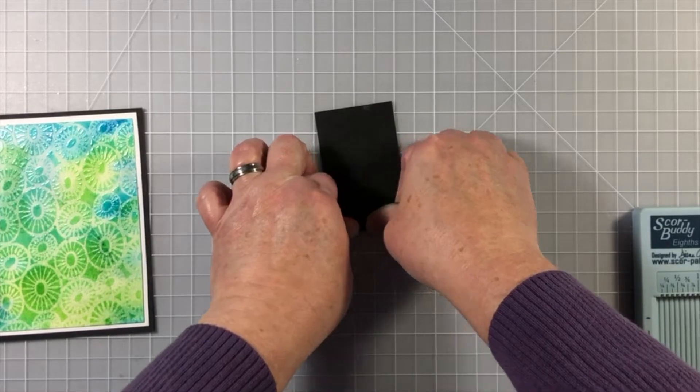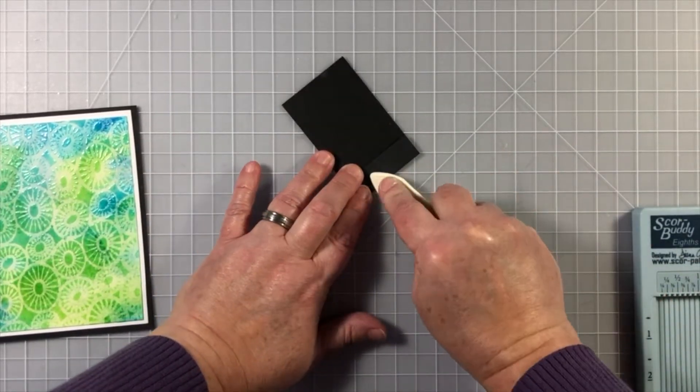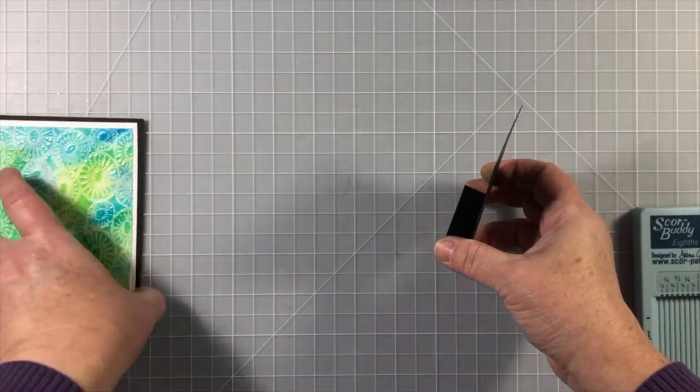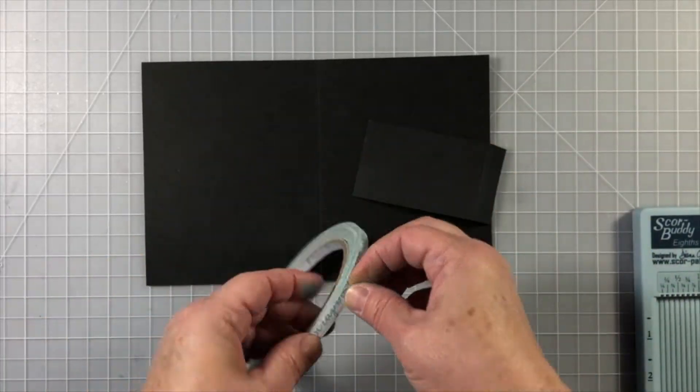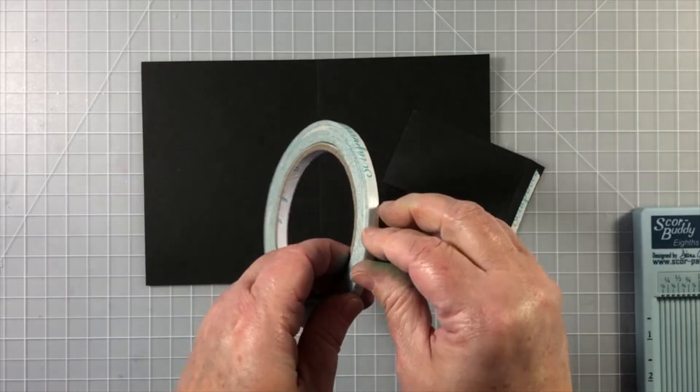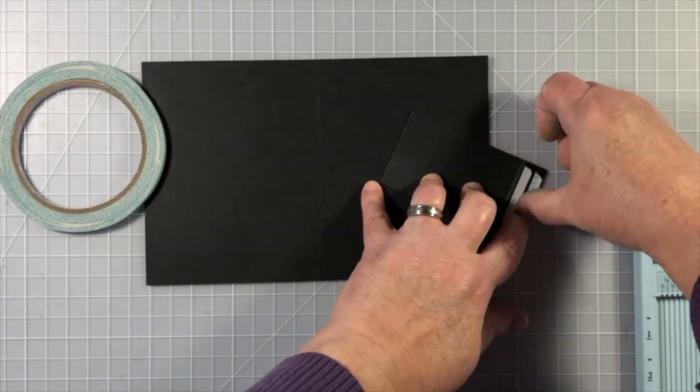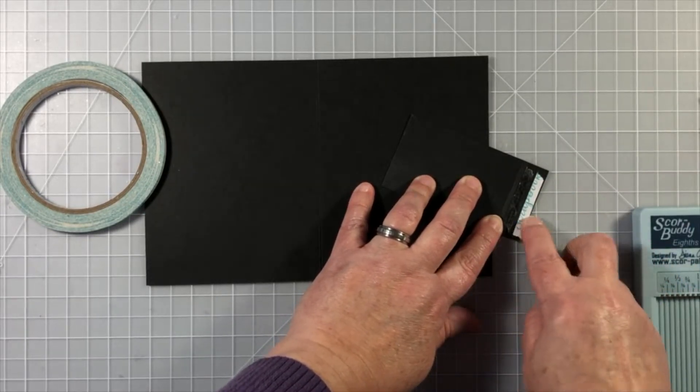So I found this scrap of black paper in my stash and it was just the perfect size. I scored it about a half an inch away from the right hand edge, and then I scored it again about an eighth of an inch away from that. I gave it two scores because it's going to allow this to fold over the card front a little easier if I give it an extra score.